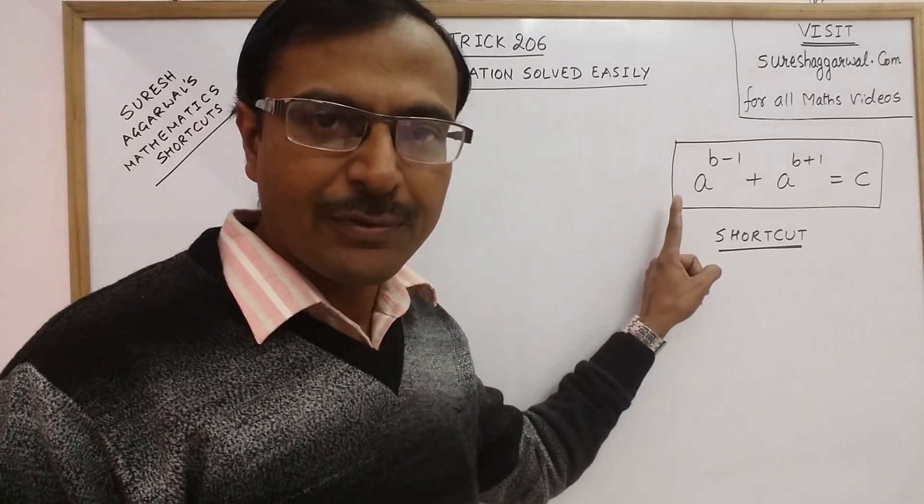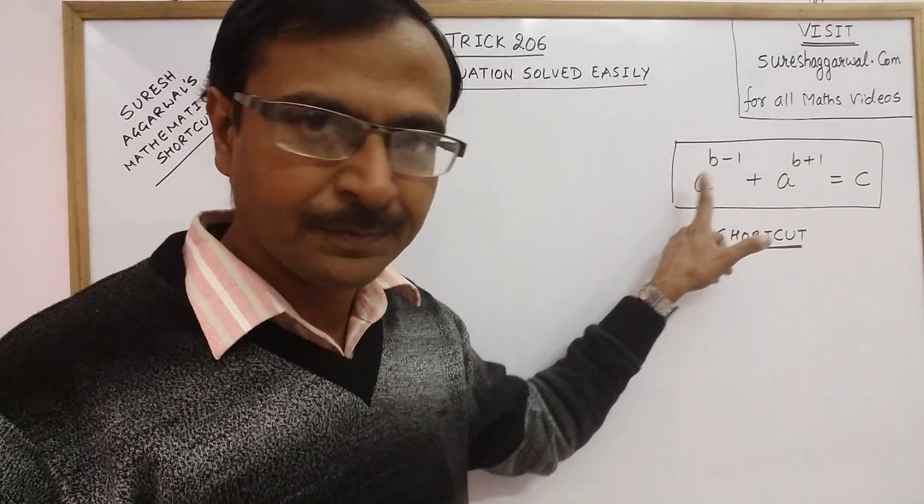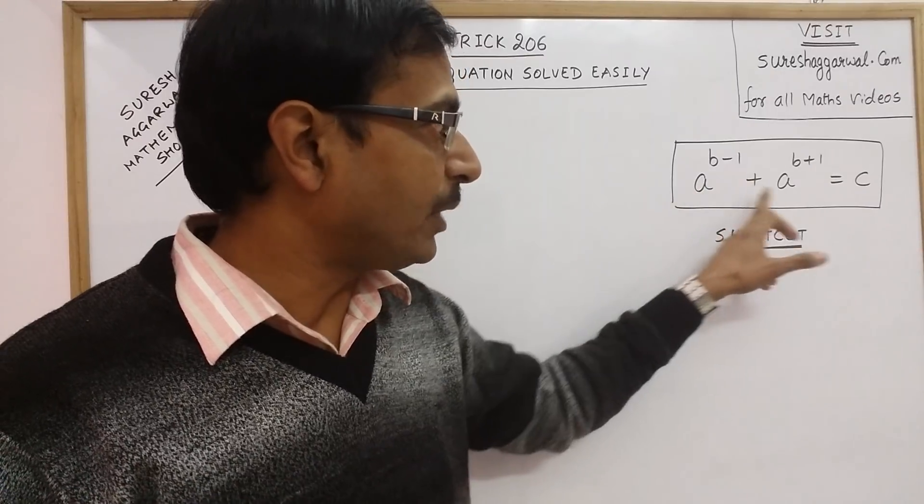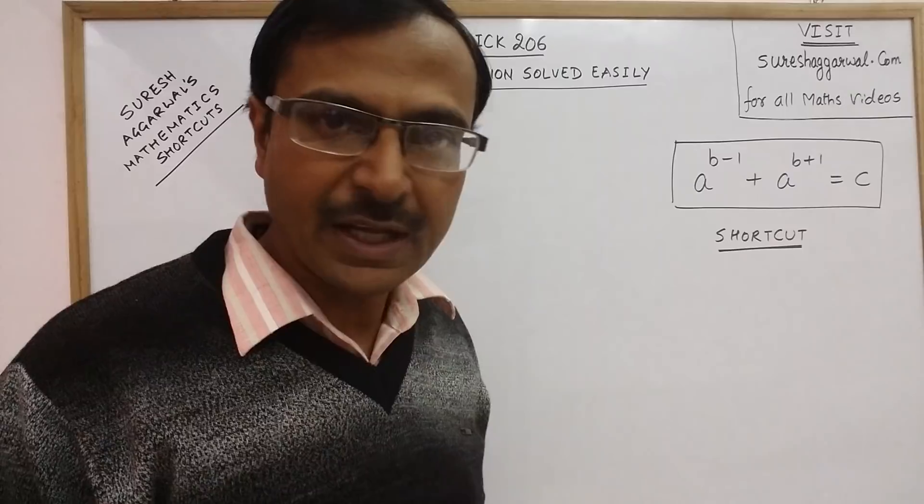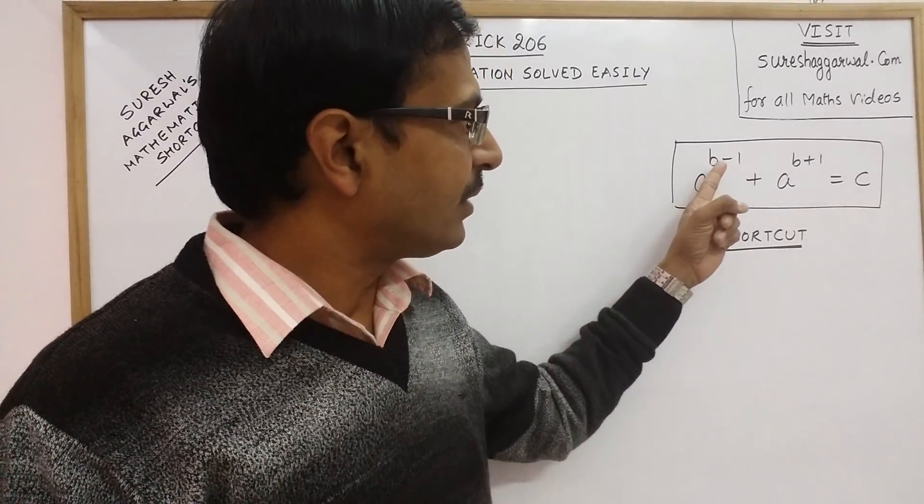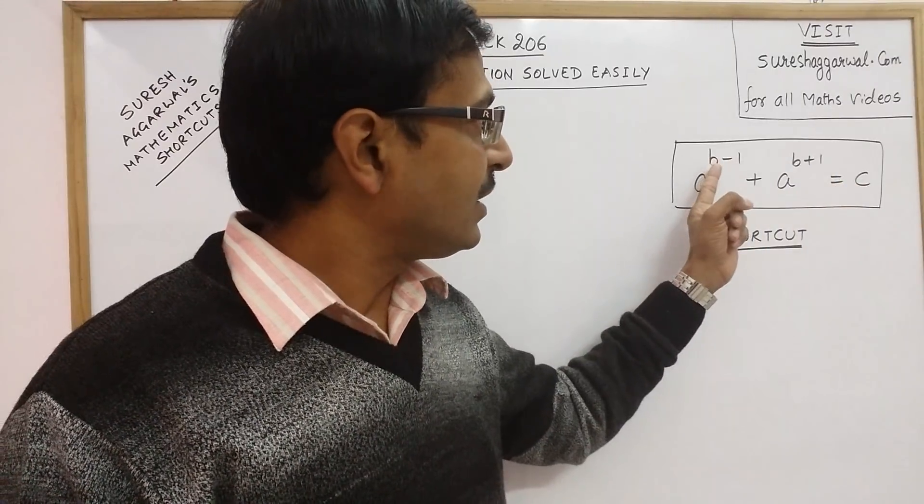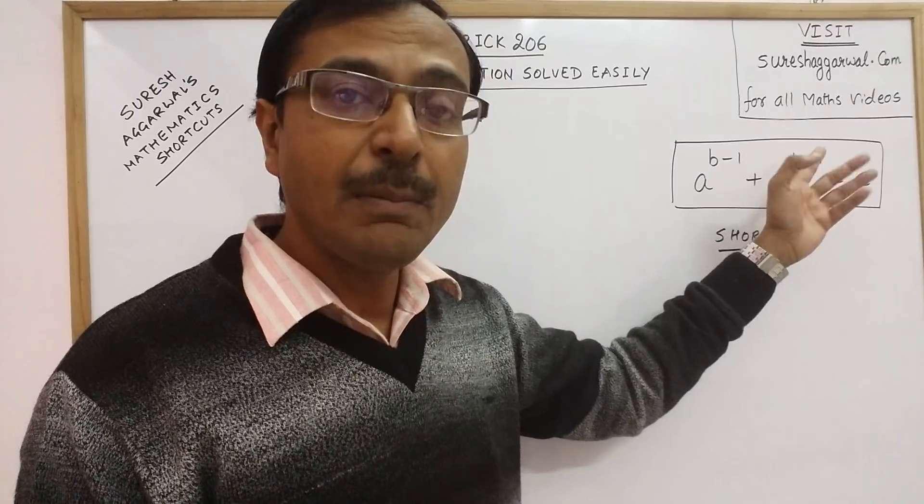Now this is a particular type of equation in which we have two terms. Both terms have a common base. The base is say a, it can be any number and the power of these two terms, see here we have b minus 1 and here we have b plus 1.